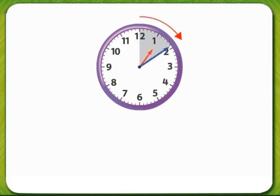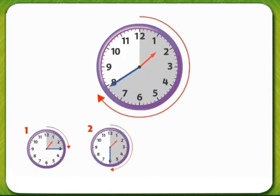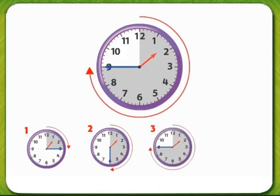From 1 to 1:15 is one quarter hour. From 1:15 to 1:30 is two quarter hours. From 1:30 to 1:45 is three quarter hours.